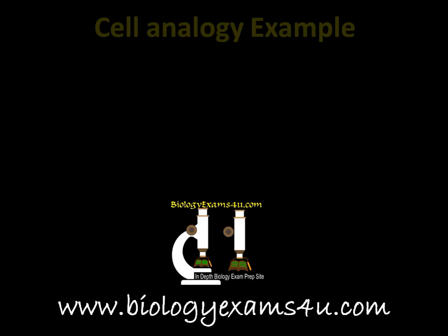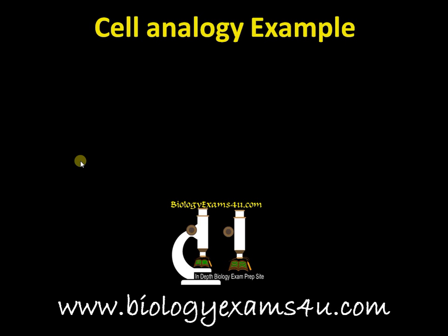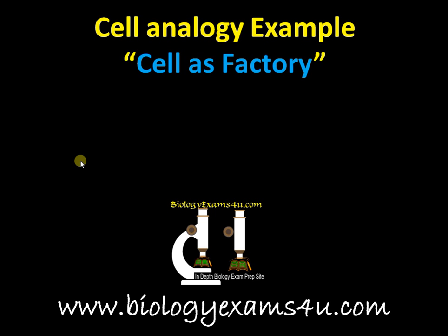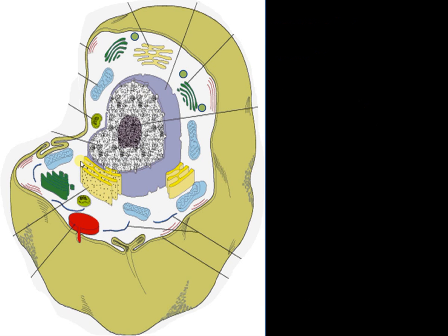Welcome to biology exams, today the topic of our discussion is cell analogy — a cell compared to a factory. This is a structure of an animal cell. In the case of a plant cell, there is a cell wall made up of cellulose, which can be considered as a surrounding wall of the factory.